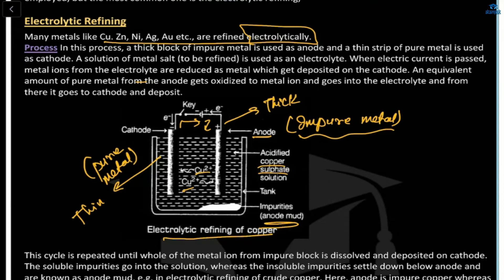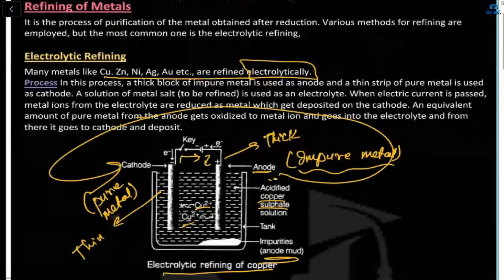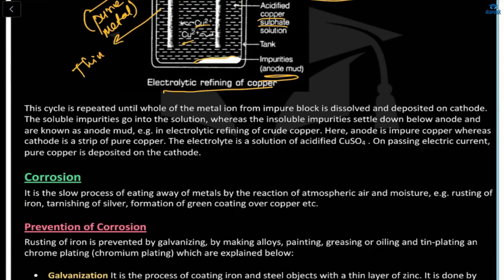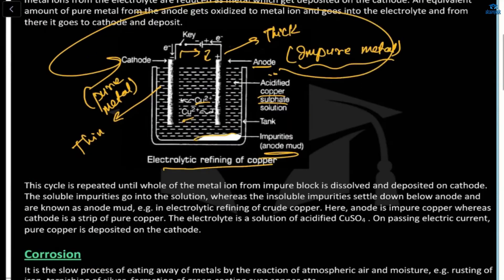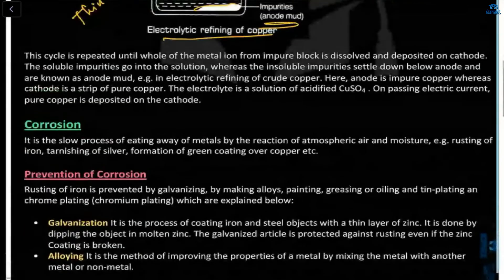In electrolytic refining, pure metal from the anode gets oxidized and is deposited onto the cathode. The cycle repeats — impure metal dissolves from the anode, pure metal deposits at the cathode. Soluble impurities go into the solution while insoluble impurities settle down as mud (anode mud). This is electrolytic refining.